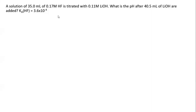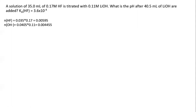The first thing you should always do when doing a problem like this is determine the moles of weak acid and moles of strong base. If your moles of weak acid are greater than your moles of strong base, this is going to be in the buffer region of the weak acid–strong base titration, which means you're going to use the Henderson-Hasselbalch equation.